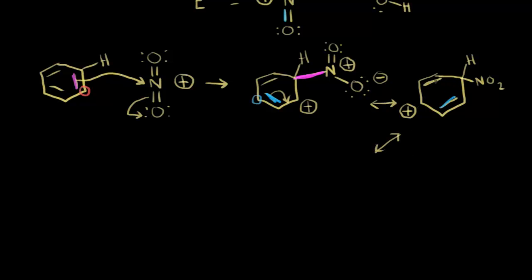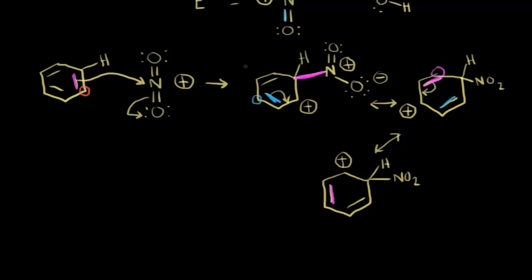We can draw yet another resonance structure. We have our ring, our nitro group already on the ring, some pi electrons here, and more pi electrons moving from here to here — which takes a bond away from the top carbon, so the positive-one formal charge is now there. So we have three resonance structures, and the sigma complex is a hybrid of these three.